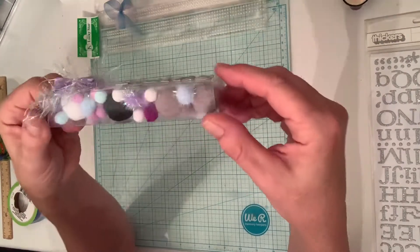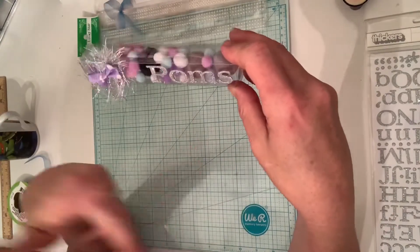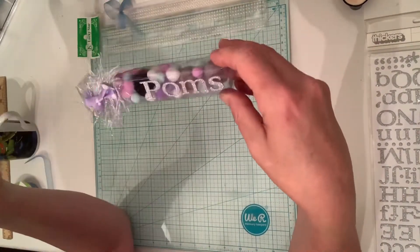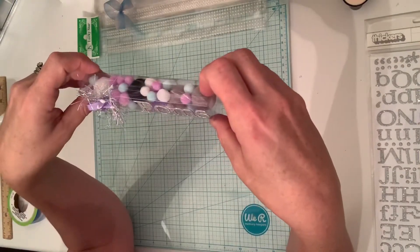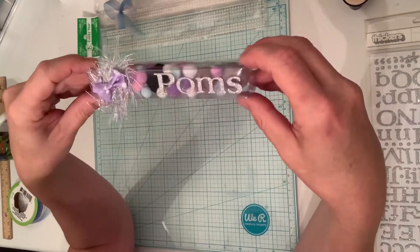I loaded it up with some pom-poms. I mean, we could put anything here - we could stick ribbon in here, confetti pieces. Actually, it would look really cute probably with confetti. Oh my goodness, I didn't even think of that. Anyway, I just took some pom-poms.